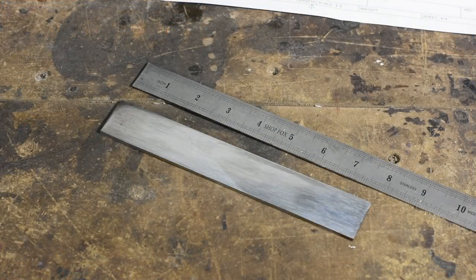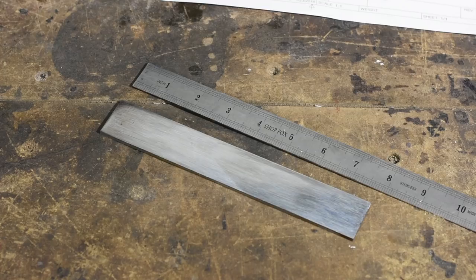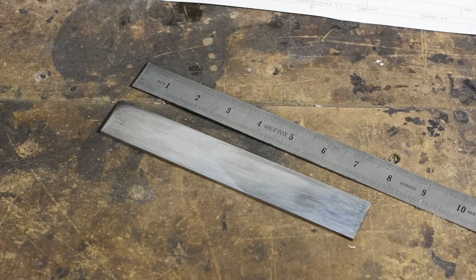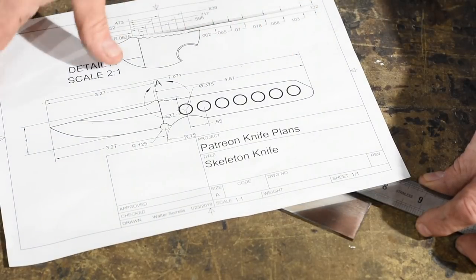In this case, we'll use a piece of 1 by 1 1⁄4 by 1 1⁄8 inch 1095 high carbon steel. You can use thicker material if you have it, 3/16ths, maybe even a 1⁄4 inch, but you probably don't want to go narrower than an inch and a quarter, so you have a little room to play with when you're drilling all the various holes.